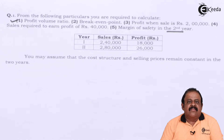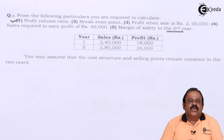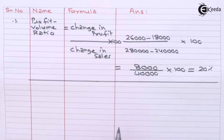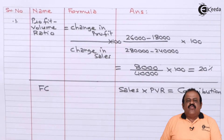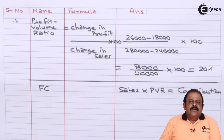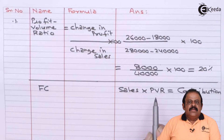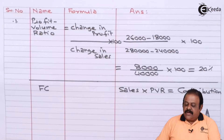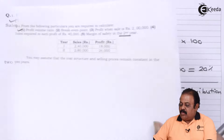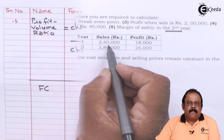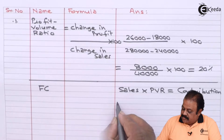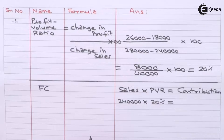Next, to find the break-even point we need the fixed cost. To find the fixed cost, we prepare a working note. First, we calculate contribution using the formula: contribution = sales multiplied by PV ratio. During Year 1, sales is ₹2,40,000, multiplied by PV ratio of 20%.